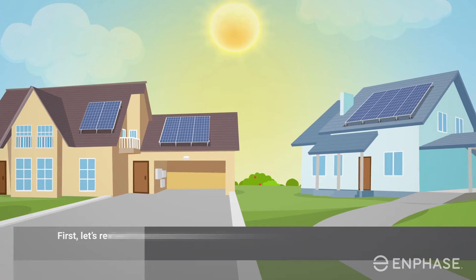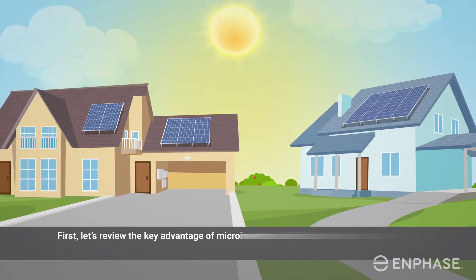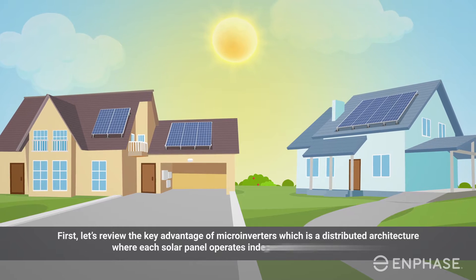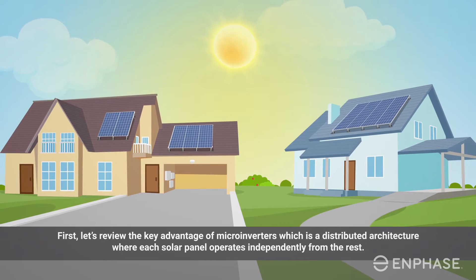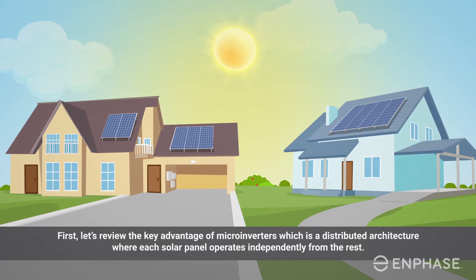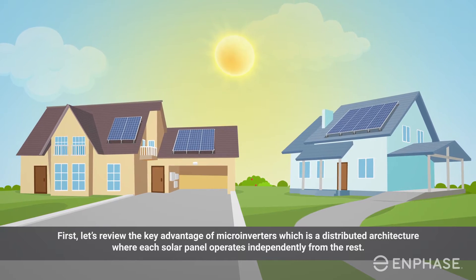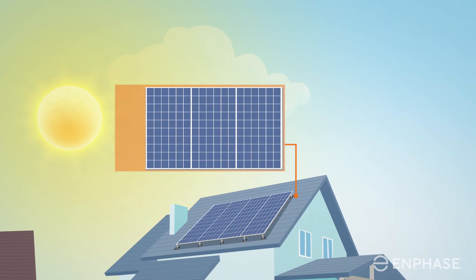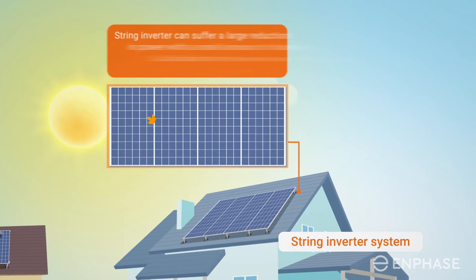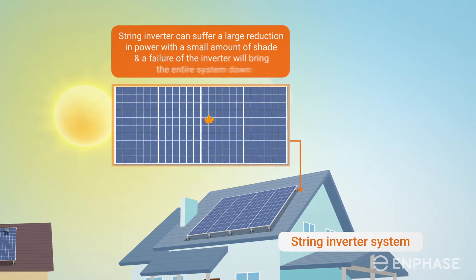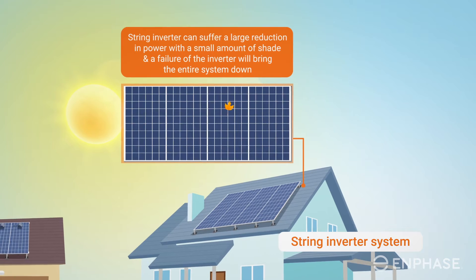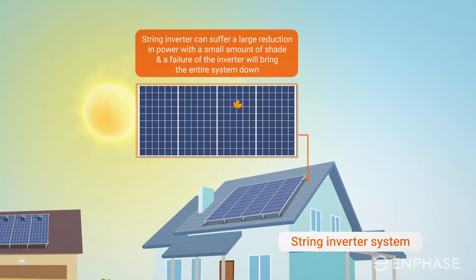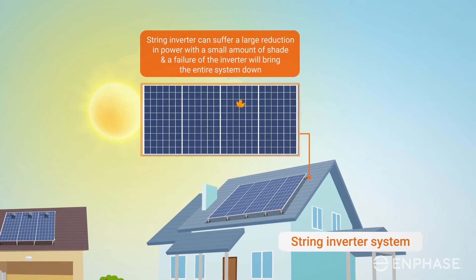First, let's review the key advantage of microinverters, which is a distributed architecture where each solar panel operates independently from the rest. A system with the alternative centralized technology — a string inverter — can suffer a large reduction in power with a small amount of shade, and a failure of the inverter will bring the entire system down.